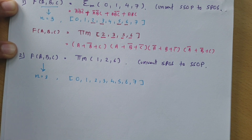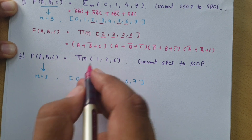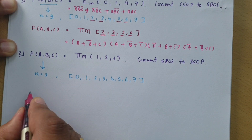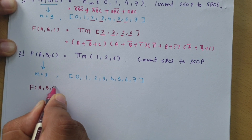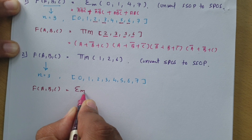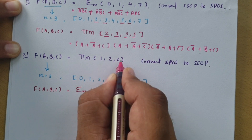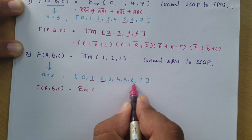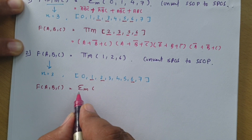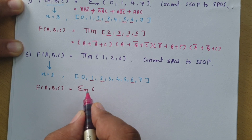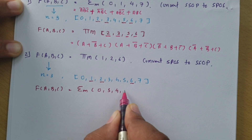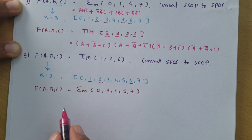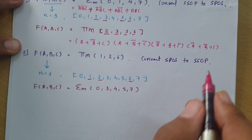To calculate minterms from maxterms, we need to take the complement of the maxterm indices. Here, 1, 2, and 6 are the maxterms, and the complement of those — written as summation of minterms — will be 0, 3, 4, 5, and 7. That is the SSOP representation.